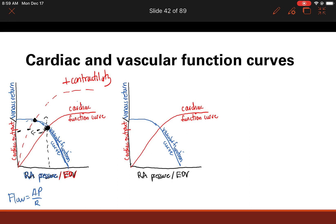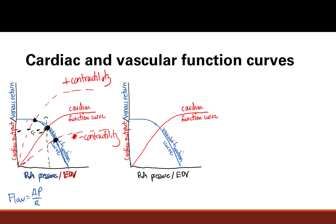Now let's look at what happens when we decrease contractility — just like we saw in the Starling curve, the cardiac function curve shifts down. Looking at the new intersection, cardiac output is decreased and end-diastolic volume increases. Because your heart is pumping less, there's less cardiac output, and because you're not pumping out enough, there's extra fluid in the heart, so end-diastolic volume increases and right atrial pressure increases.